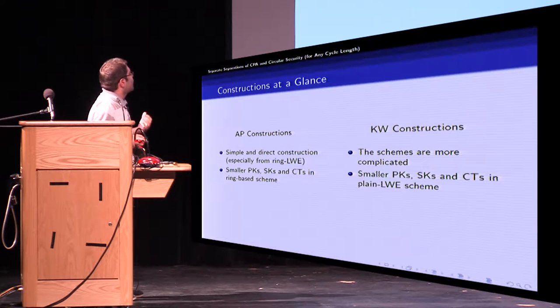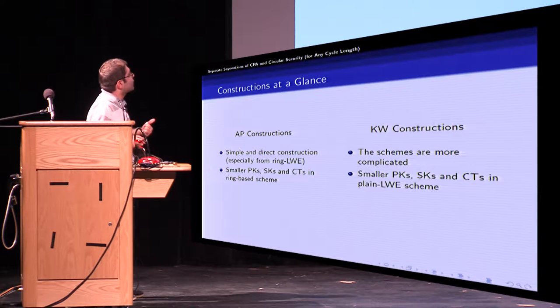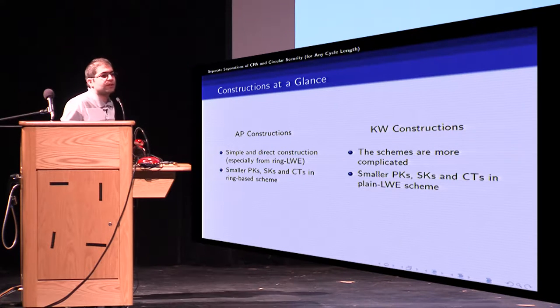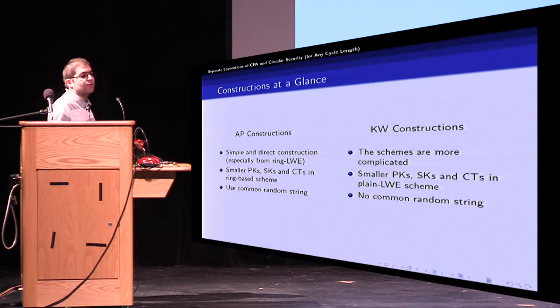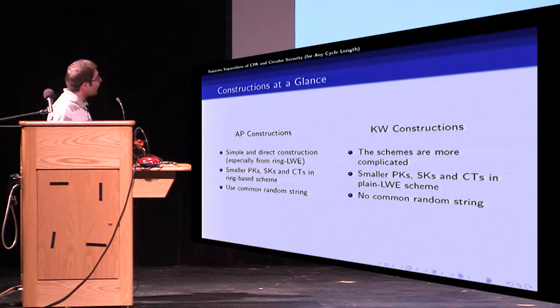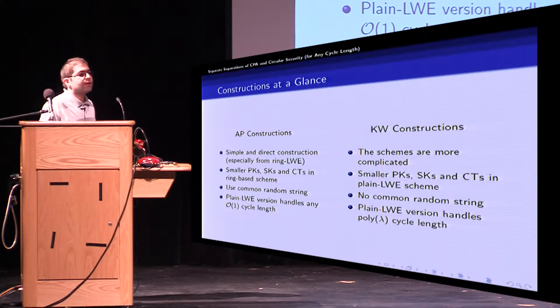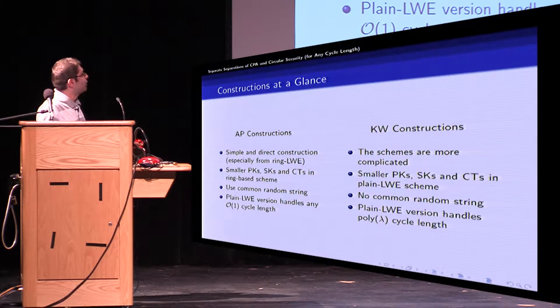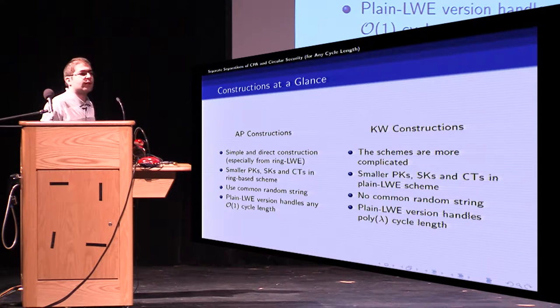AP constructions has smaller public keys, secret keys and ciphertext in ring setting whereas KW constructions is more efficient in plain LWE version and AP constructions use common random string whereas KW construction has no common random string. And finally AP constructions handles just constant cycle length in plain LWE version whereas KW constructions handles polynomial cycle length.